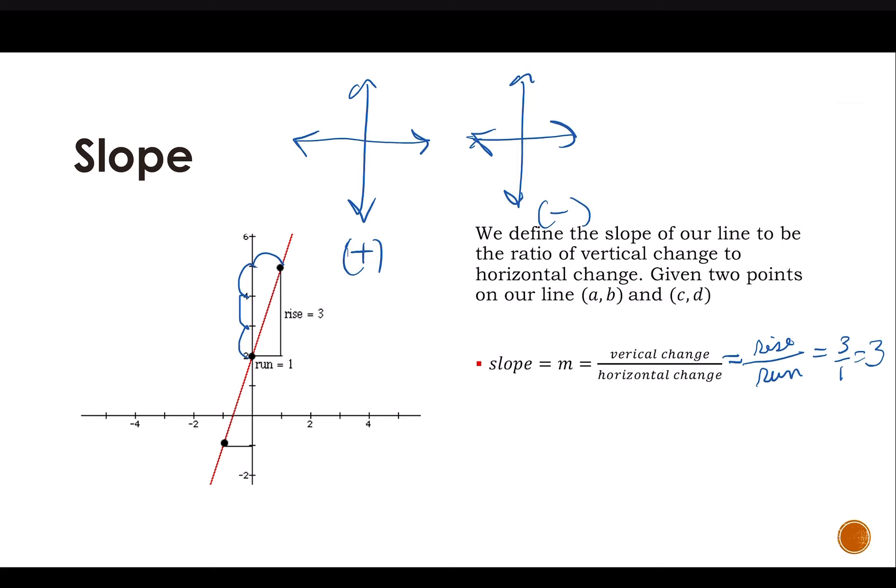We have positive slope that looks like it's going uphill, and we have negative slope that looks like it's going downhill. So that's one way to always check yourself. Make sure if our slope is negative, it's going downhill. Positive, your line is going uphill.